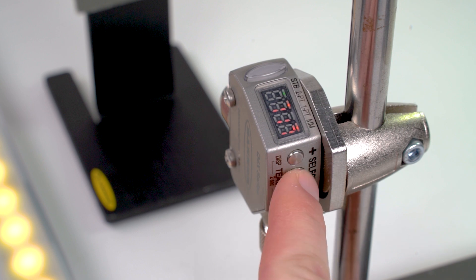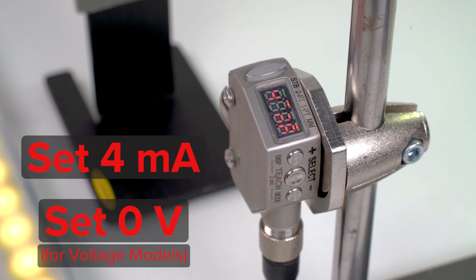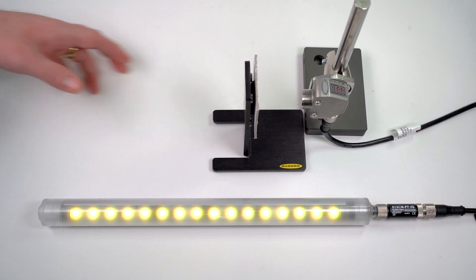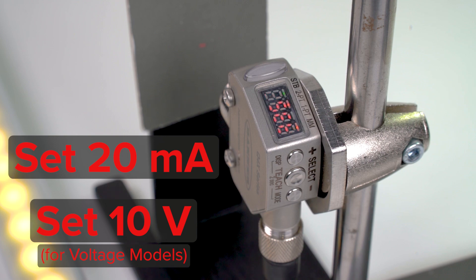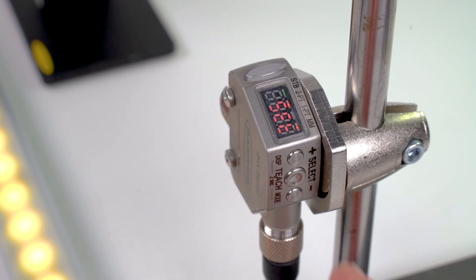To begin the teach process, press and hold the select or teach button for two or more seconds. The display will show set four milliamps. Present the target distance that will pertain to this end of the analog signal and press the select button. The display will then show set 20 milliamps. Present the target distance for this end of the signal and press the select button again.